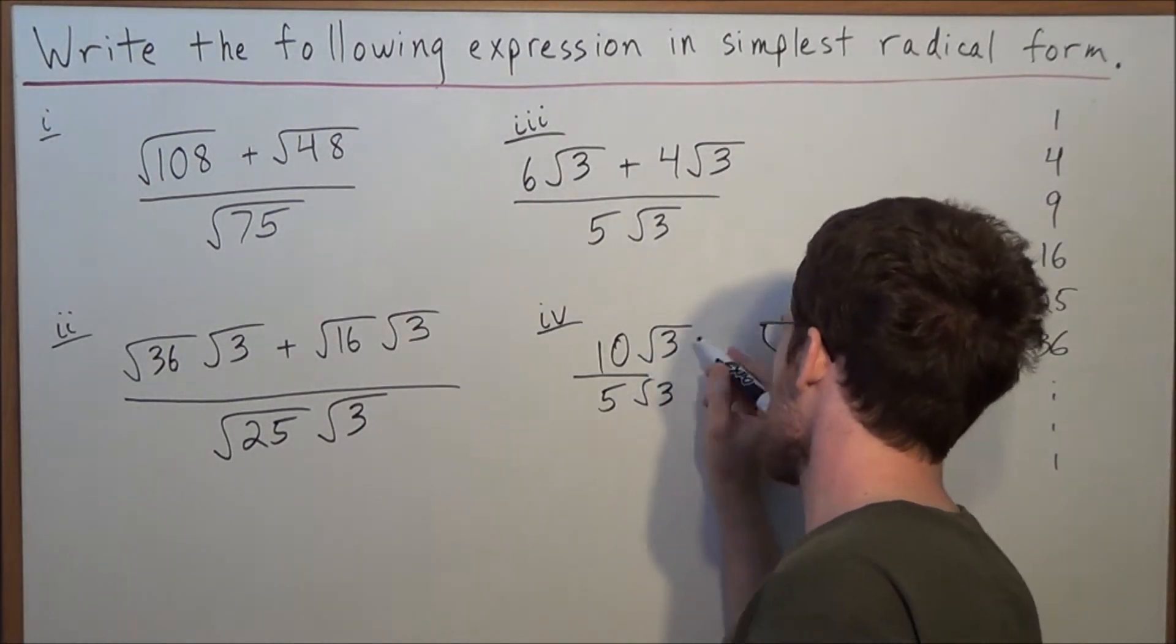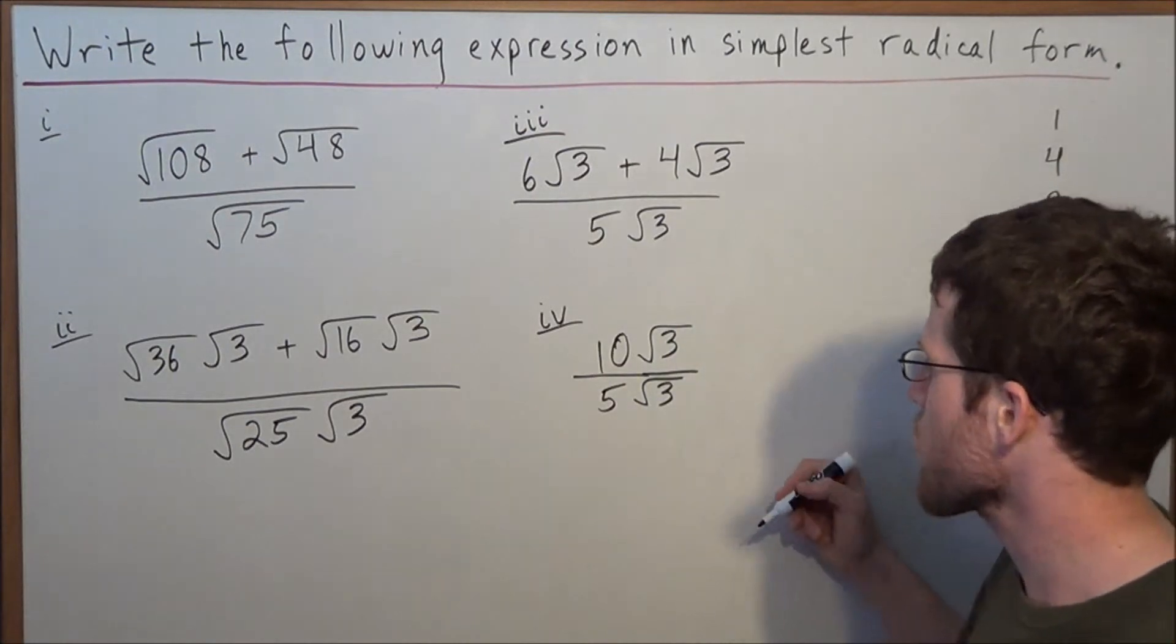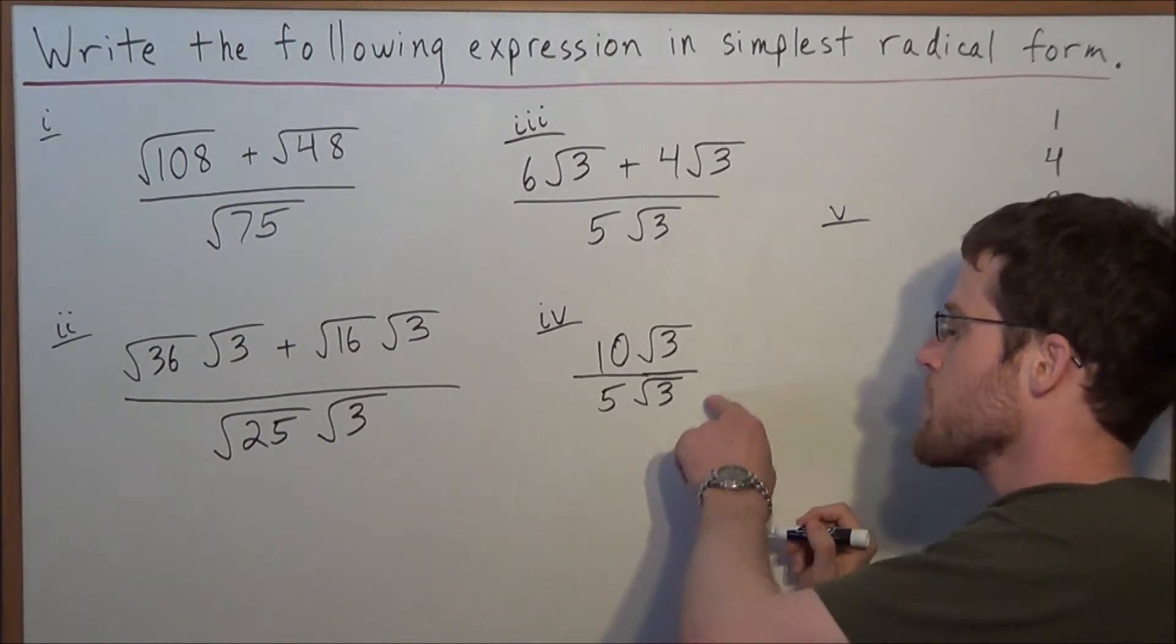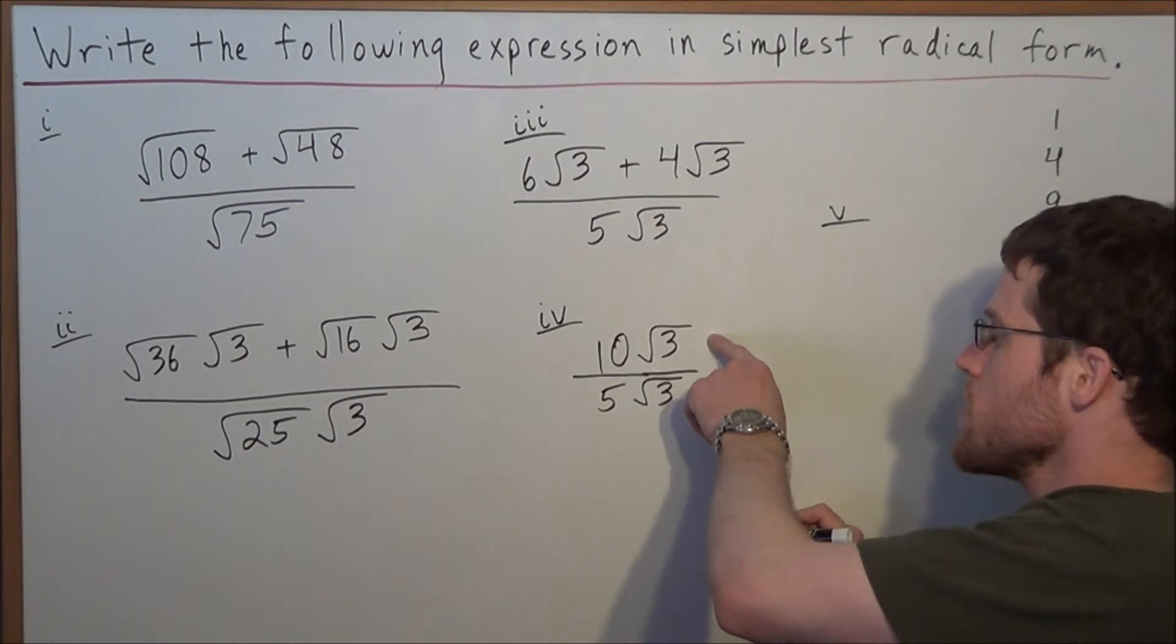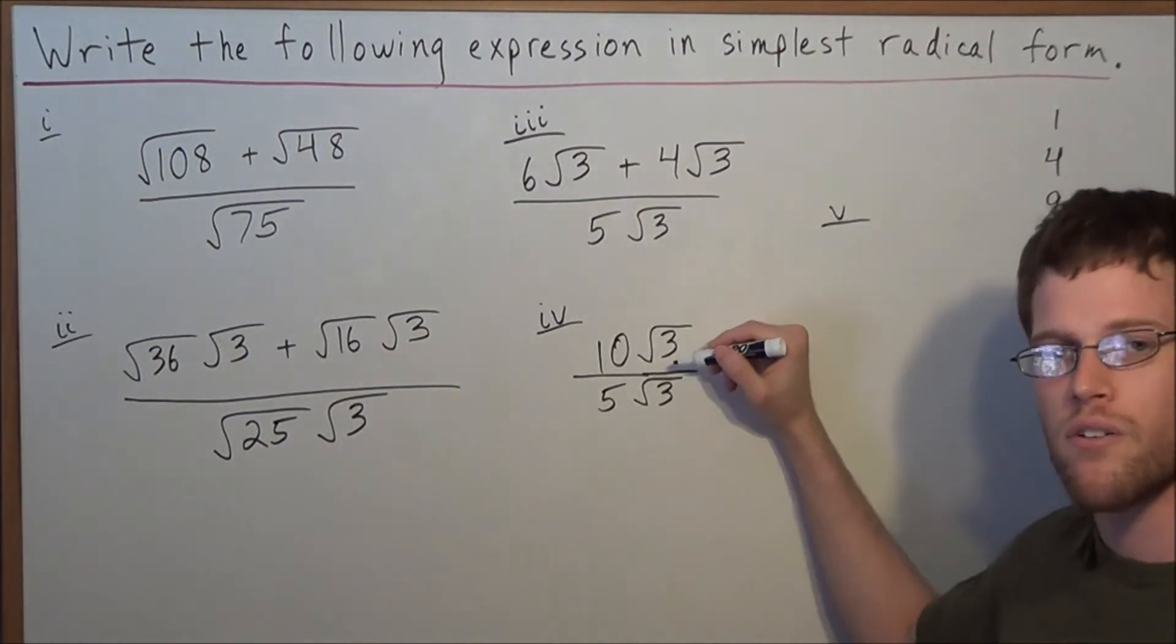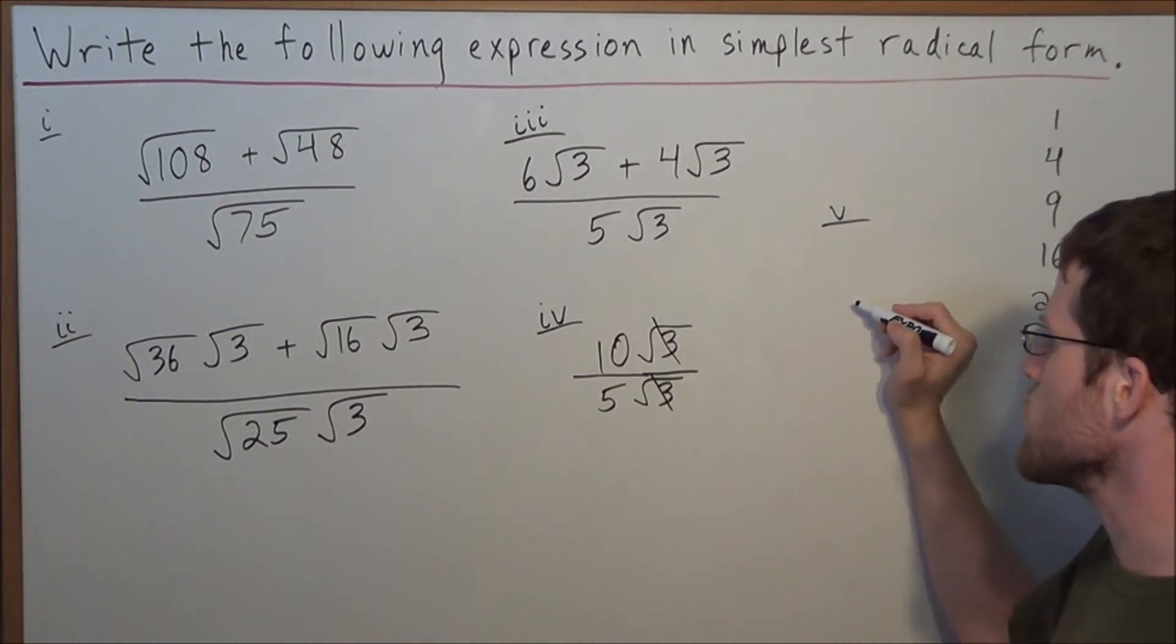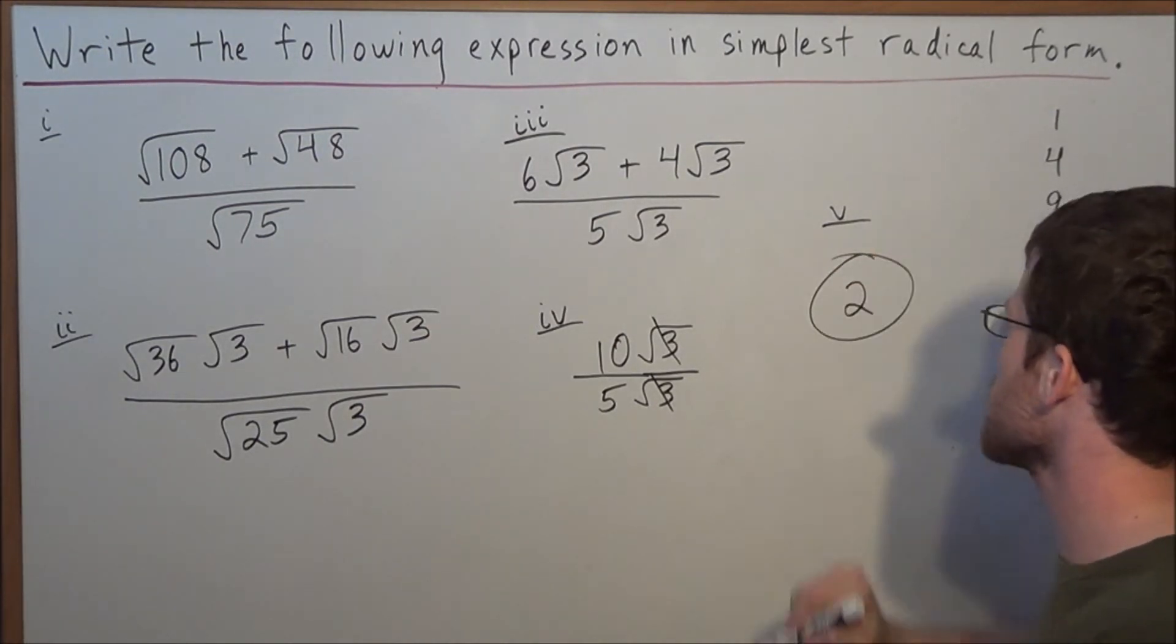Let's make this a little bit neater. So we have 10 radical 3 over 5 radical 3. But now at this stage, we could go ahead and finish this problem. Notice the common factors in the numerator and denominator. We could, in some sense, just cancel these out. Radical 3 divided by radical 3 is 1. So we could just cancel these out. And now 10 divided by 5 is simply 2. So this tells us that our final answer to this problem is 2.